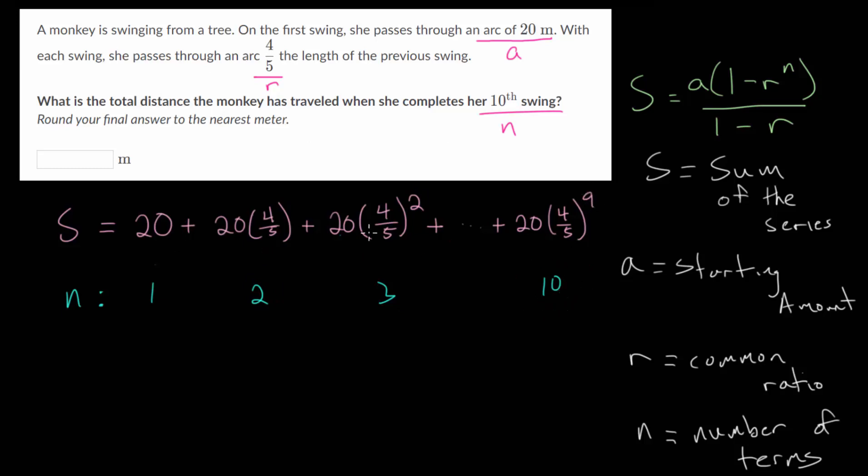So you could add this up by hand by plugging it into a calculator, which can be very tedious. Or we can use this formula. So let's just write down what we know for the formula. We know that our starting value is 20. We know our common ratio is 4 fifths. And we also know our term number. So N, that is 10. There are 10 different swings here.